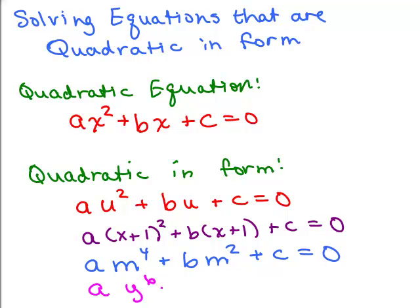Another example would give you ay to the 6th plus by cubed plus c equals 0. Instead of u squared and u, you have y cubed and y cubed squared, which gives you y to the 6th. So we're focusing on identifying the u and the u squared in these expressions.